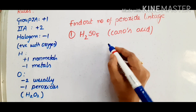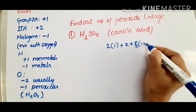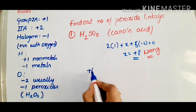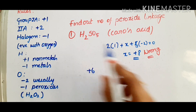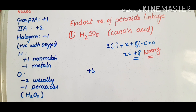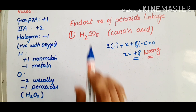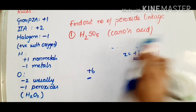First, calculate the general oxidation state of the central atom. The maximum oxidation state of the central atom — sulfur belongs to group 6, so the maximum oxidation state of sulfur is plus 6.